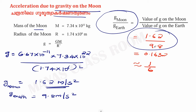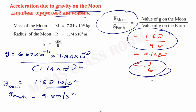If you use the values, there is 1.62 for the Moon and 9.8 for the Earth. The ratio is approximately 1 by 6. That is, the value of g on the Moon is 1 by 6 of the value of g on Earth.